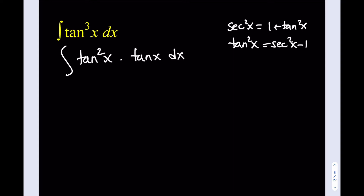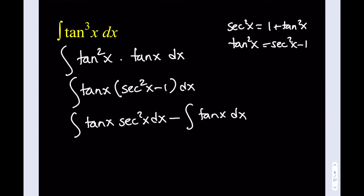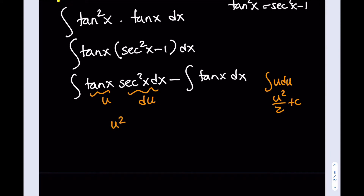What's great about this substitution is I can write the integral as tangent x times (secant squared x minus 1) dx. Distributing gives: the integral of tangent x · secant squared x dx, minus the integral of tangent x dx. For the first integral, tangent x is present alongside its derivative secant squared x dx — that signals u-substitution with u equals tangent x and du equals secant squared x dx. The integral of u du is u squared over 2 plus c.